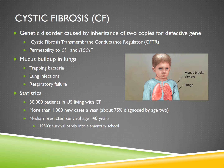30,000 patients in the U.S. are living with cystic fibrosis, and more than a thousand new cases are diagnosed each year, and about 75 percent of those are diagnosed by the age of two. The median predicted survival age today is about 40 years old, which is significantly better than in the 1950s, where survival was barely into elementary years.